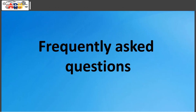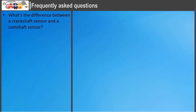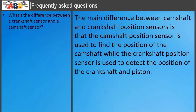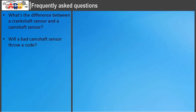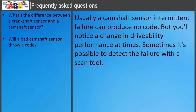What's the difference between a crankshaft sensor and a camshaft sensor? The main difference is that the camshaft position sensor is used to find the position of the camshaft, while the crankshaft position sensor is used to detect the position of the crankshaft and piston. Regarding error codes, a camshaft sensor with an intermittent failure can produce no code, but you'll notice a change in drivability performance at times. Sometimes it is possible to detect the failure with a scan tool.